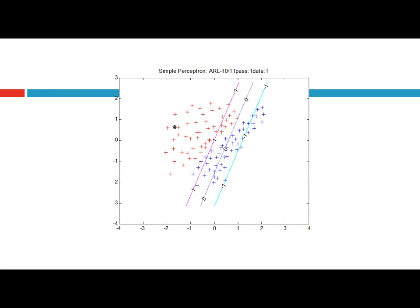Here's an example with the first training instance. Since we initialize W with all components 0, W^T·X gives 0, so the algorithm adds Y_i · X_i to the zero vector. The decision boundary shown by the blue line is the result of the update from the first training instance.